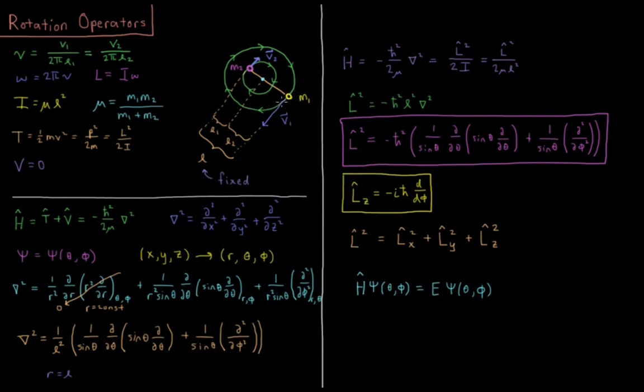Each of them has a velocity vector which is perpendicular to the bond. Each of them travels in a circle around their common center of mass.